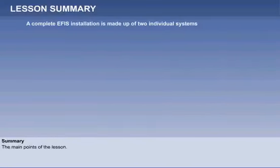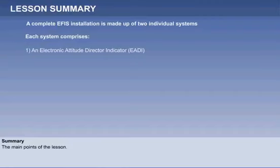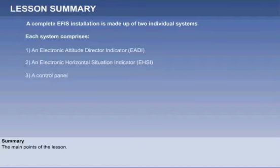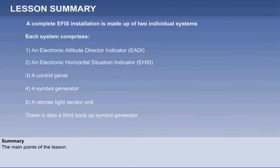A complete E-FIS installation is made up of two individual systems. Each system comprises an electronic attitude director indicator, or E-ADI, an electronic horizontal situation indicator, or E-HSI. There is also a third backup symbol generator.